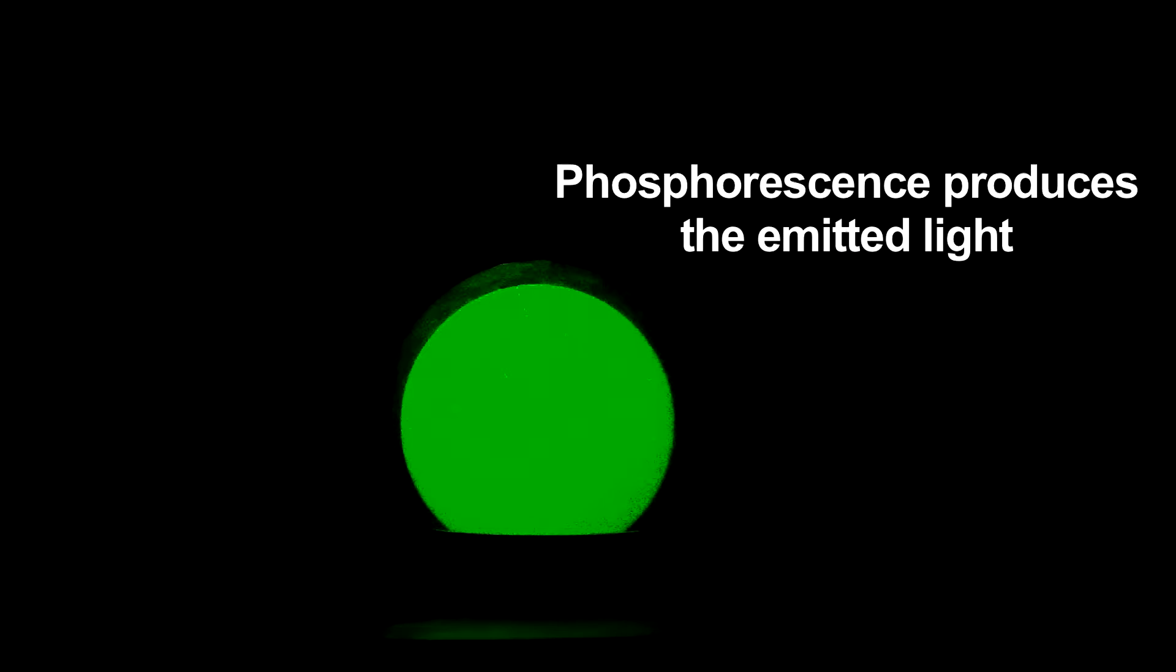Once the light is off, these electrons slowly lose their added energy and return to their lower energy ground states. The energy lost is given off as light.